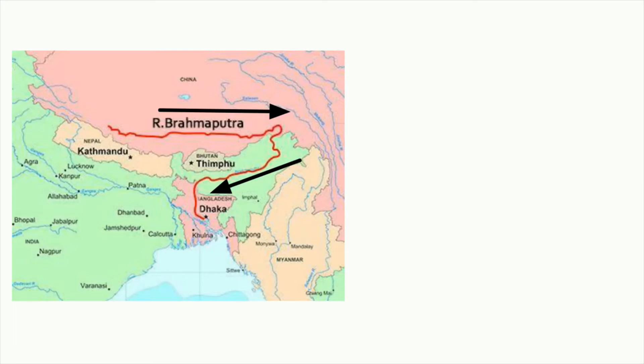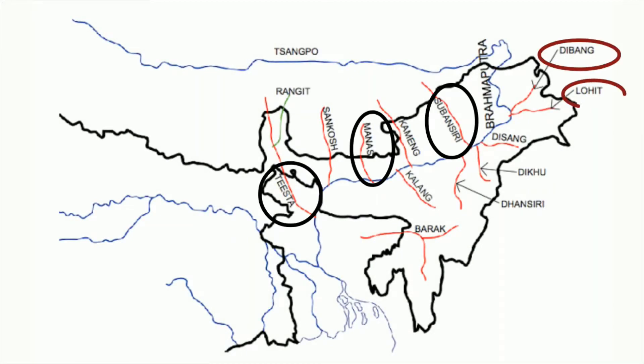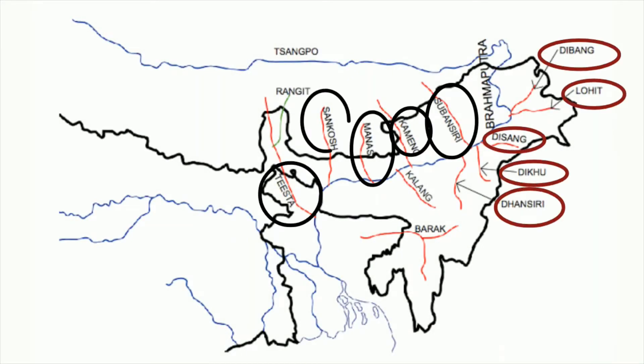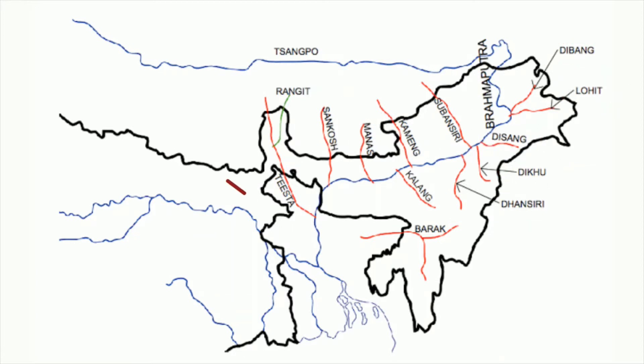The river then travels through the Assam plains, where it is joined by multiple tributaries like Subansiri, Manas, and Tista from the north, and Dibang, Lohit, Dhansiri, etc. from the south. After travelling through the Assam plains, it enters the country of Bangladesh as Jamuna, then it is joined by the Padma in Bangladesh and drains into the Bay of Bengal as the Meghna river.